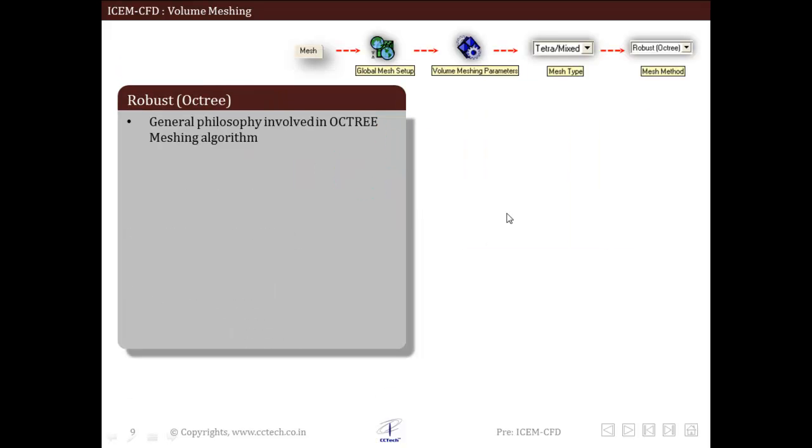Let us see the first octree methodology. For this, we go to mesh, then global mesh setup, then volume meshing parameters. We click on mesh type and select the robust octree method. We will see the general methodology of steps involved in octree meshing algorithm.